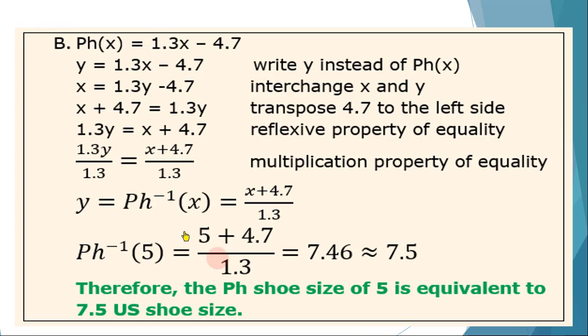For letter B, we are to get the inverse. So we write this as y = 1.3x - 4.7. Write y instead of Ph(x). Then interchange x and y. This becomes y becomes x and x becomes y. So reason interchanging x and y.